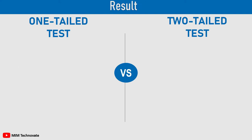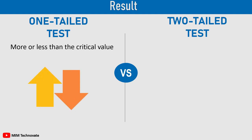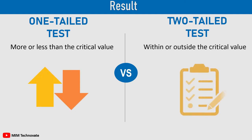In a one-tailed test, the test parameter calculated is more or less than the critical value, while in the two-tailed test, the result obtained is within or outside the critical value.